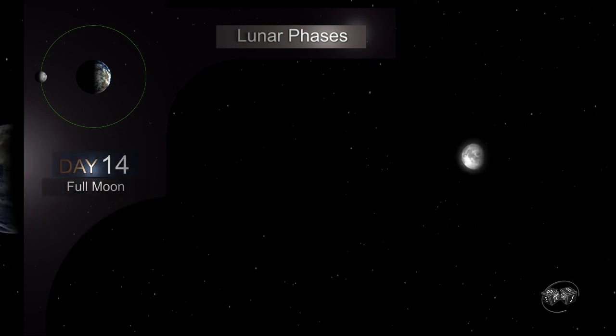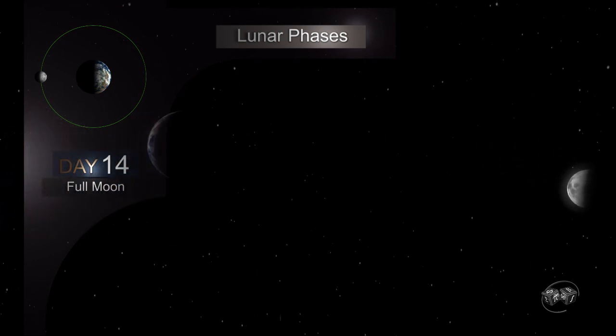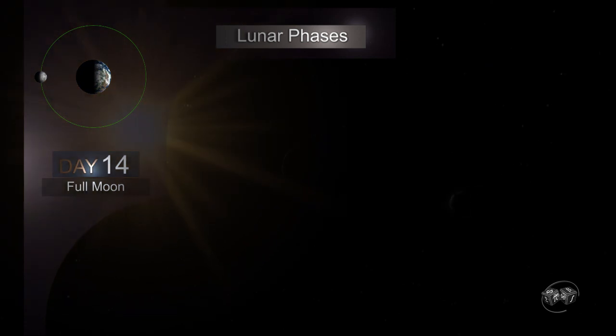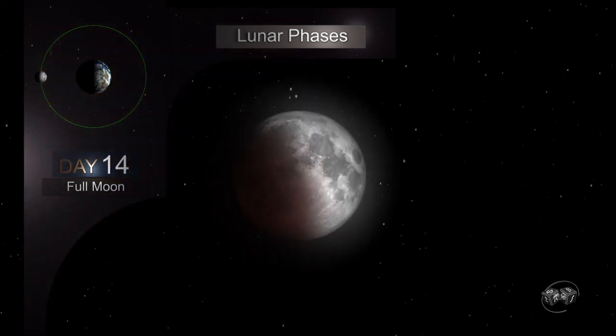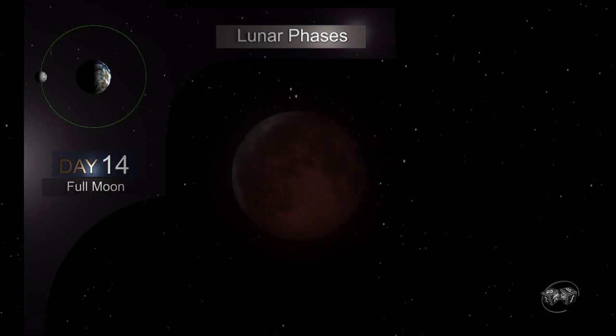During the full Moon the Earth is between the Sun and the Moon. If the right conditions are met can occur lunar eclipse. This phenomenon occurs when the shadow of the Earth darkens the surface of the Moon. This eclipse can last several hours.